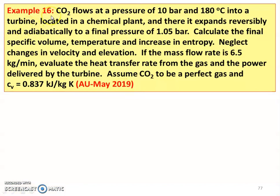Example number 16 from May 2019 question paper. CO2 carbon dioxide flows at a pressure of 10 bar and 180 degrees Celsius into a turbine located in a chemical plant, and there it expands reversibly and adiabatically to a final pressure of 1.05 bar. Calculate the final specific volume, temperature, increase in entropy. Neglect the change in velocity and elevation. If the mass flow rate is 6.5 kg per minute, evaluate the heat transfer rate from the gas and the power delivered by the turbine. Assume CO2 to be perfect gas and CV equal to 0.837 kJ per kg Kelvin.